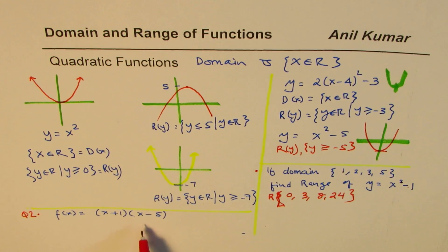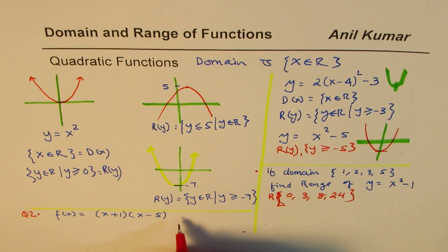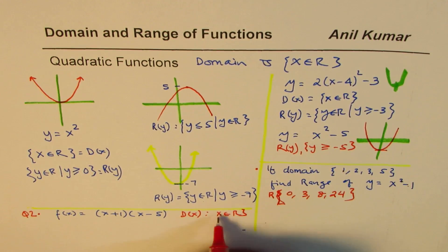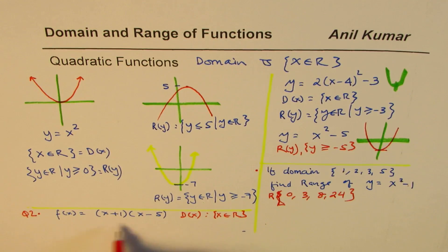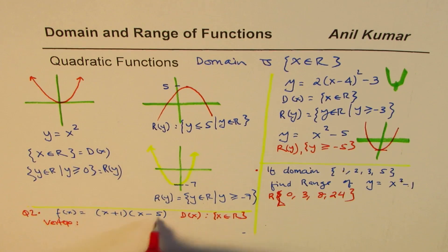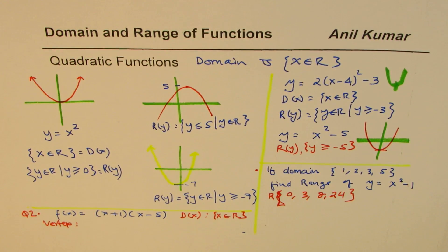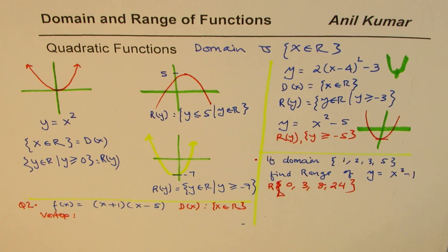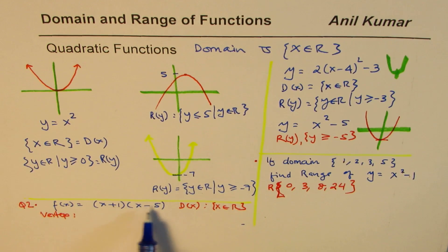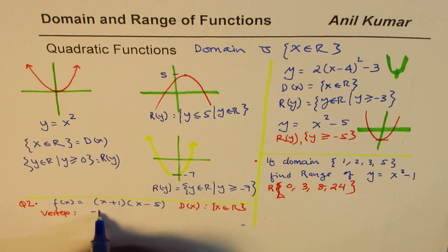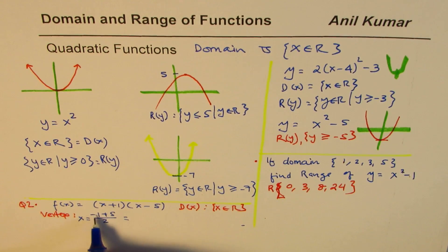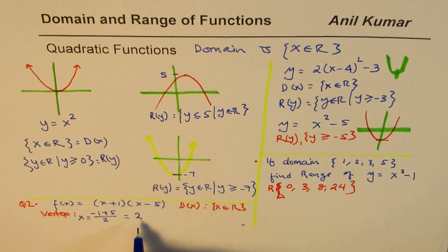In this particular case, we know that the domain is x belongs to real numbers. However, to find the range, we need to find the vertex. Where is the vertex? Vertex is at the axis of symmetry. So the two x-intercepts are at minus 1 and plus 5. So we do minus 1 plus 5 divided by 2. That is the x value. And this value is 4 divided by 2, which is 2.